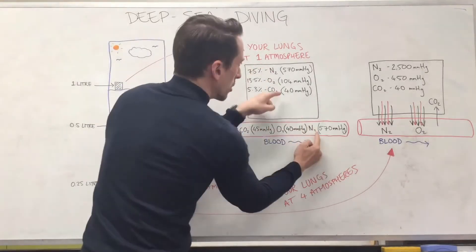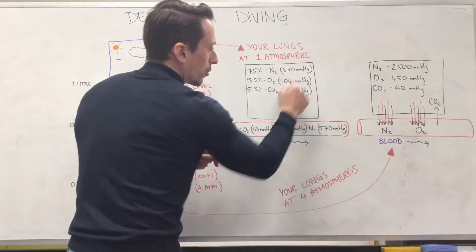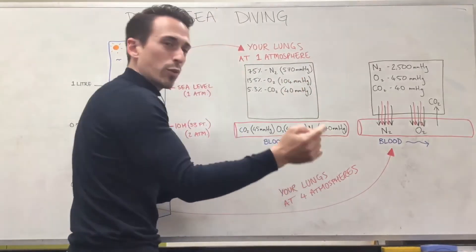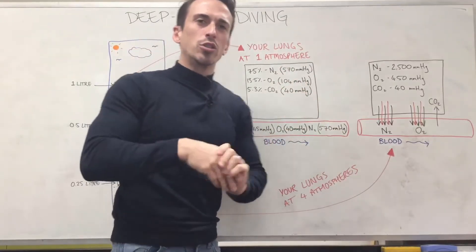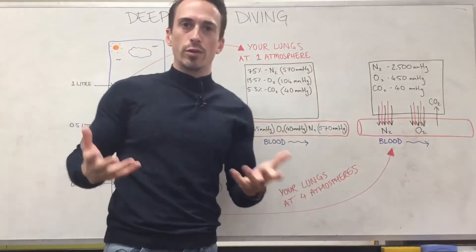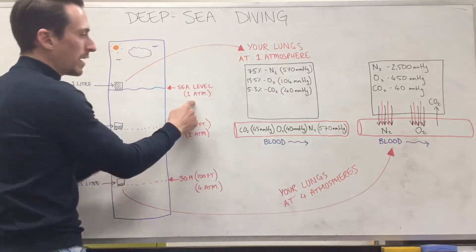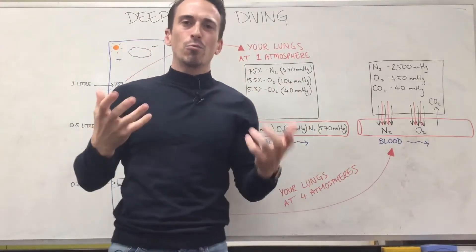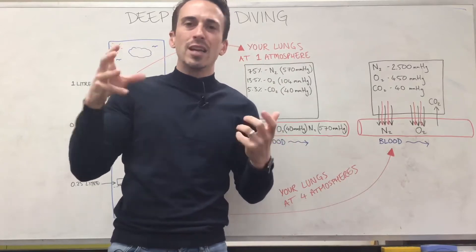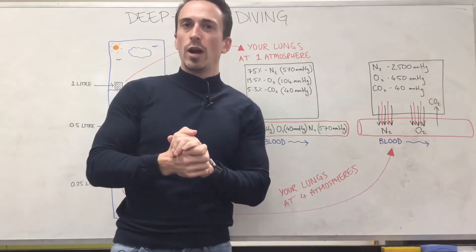All right, nitrogen. 570 millimeters of mercury in the lungs, 570 millimeters of mercury in the blood. Well, there's not much difference. There's not much of a pressure change. Therefore, nitrogen doesn't care about going back and forth at all. In actual fact, at one atmosphere, you have around about a liter of nitrogen dissolved in the blood, but it's not really going to go into our tissues. It doesn't like going into our tissues.